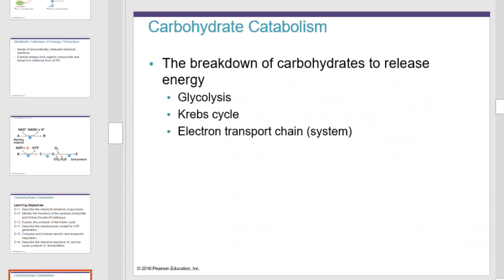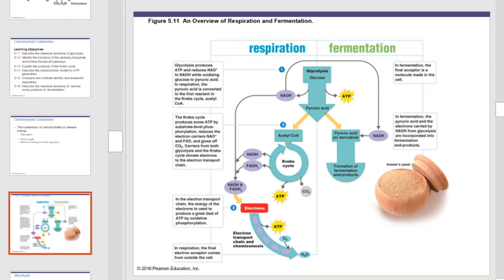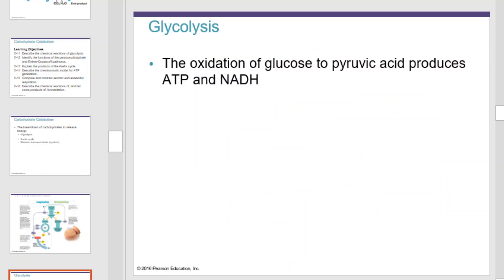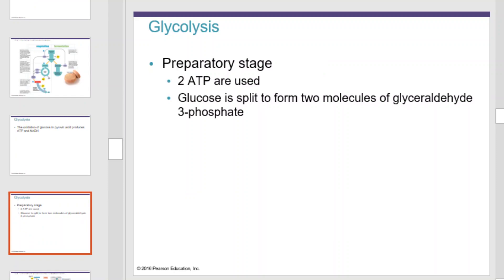Carbohydrate catabolism is all about the breakdown of carbohydrates to release energy. There are three steps: glycolysis, the Krebs cycle, and the electron transport chain, also known as the electron transport system. Glycolysis is the oxidation of glucose to pyruvic acid, and it produces ATP and NADH. In the preparatory stage of glycolysis, two ATP are used to activate a glucose molecule. Glucose is split to form two molecules of glyceraldehyde 3-phosphate.